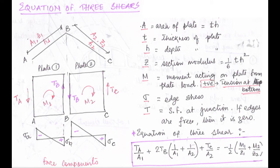Now moving to the next diagram: for plate 1 and plate 2, looking at the top view, I have shown clockwise moments M1 and M2. M stands for the moment acting on the plate from the plate load. Sign convention: if tension is generated at the bottom, it is taken as positive. TA, TB, TC are the shear forces at the junctions. If the edges are free, the shear force at the edge is zero — so TA and TC at free ends are zero.